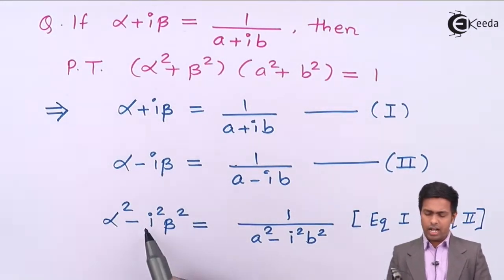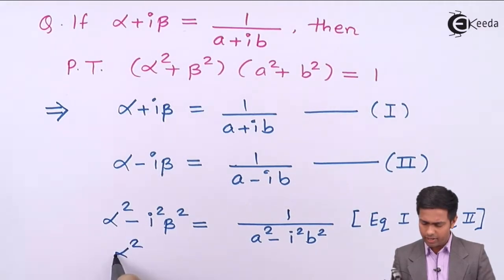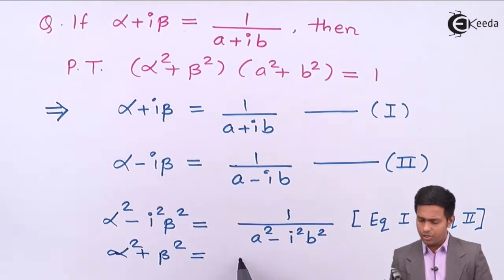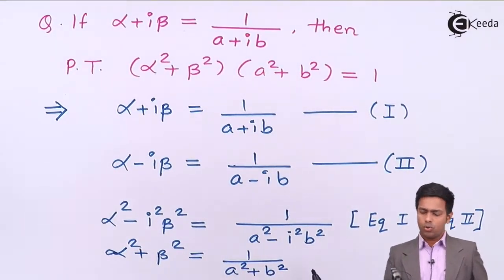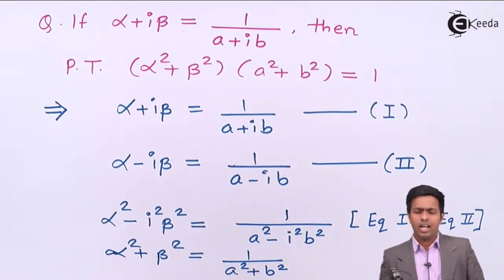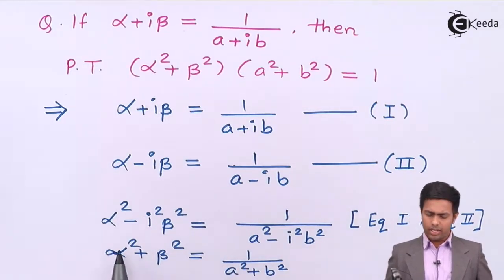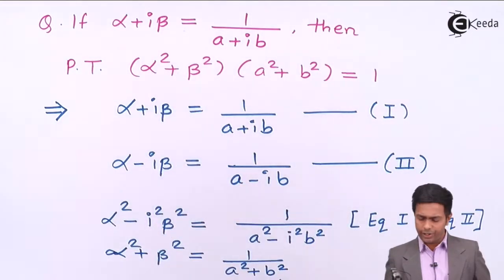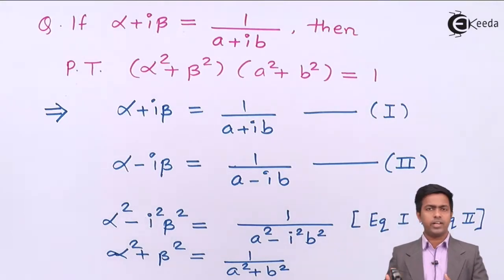Now, i square equals minus one, so minus times minus gives plus. The left hand side becomes alpha square plus beta square, and the right hand side becomes 1 upon a square plus b square, since i square is again minus one. Now shifting the denominator to the left hand side, we get alpha square plus beta square into a square plus b square equals 1, which is exactly the result we wanted to prove.